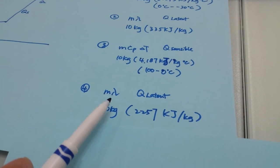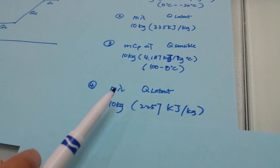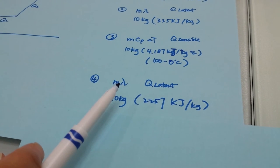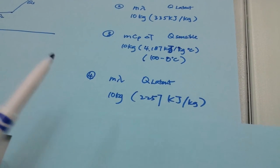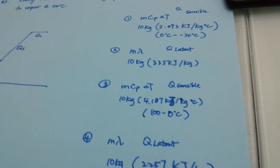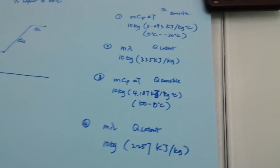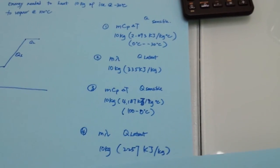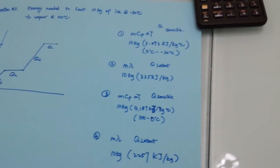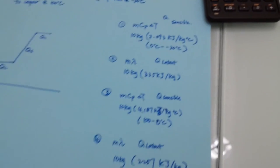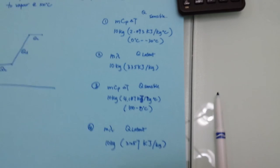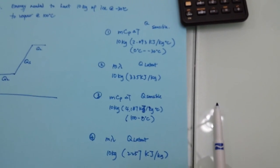And then finally the latent heat from boiling water to vapor. And you get all these four steps together. Do the calculation, add them all up. And then we will be able to find the energy needed to turn 10 kilogram of ice at negative 30 degrees Celsius to vapor at 100 degrees Celsius.